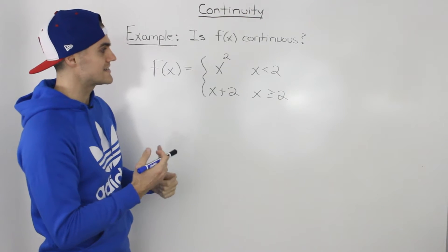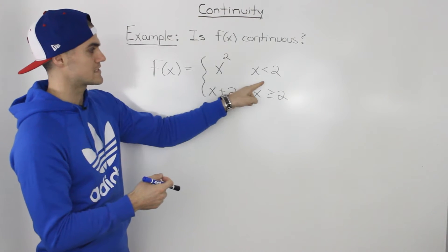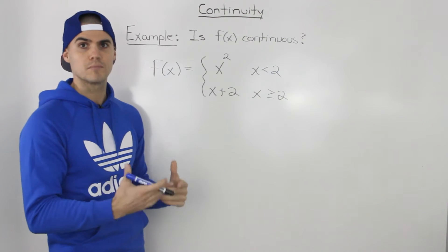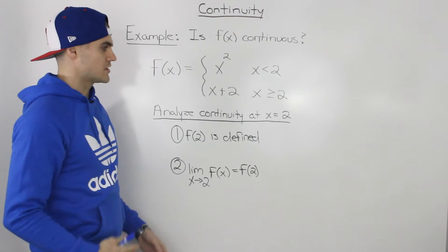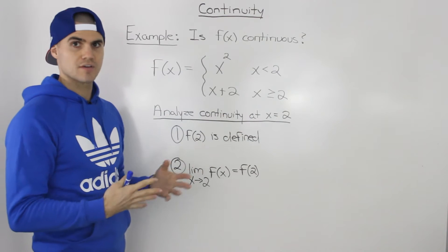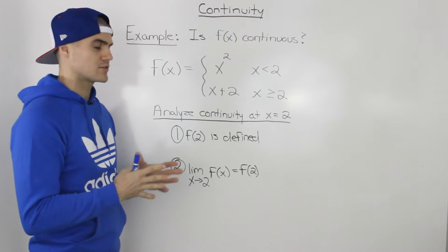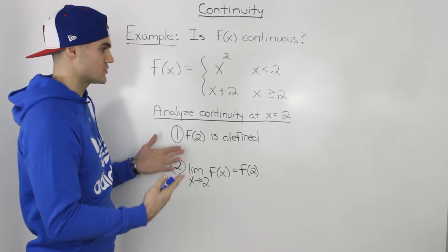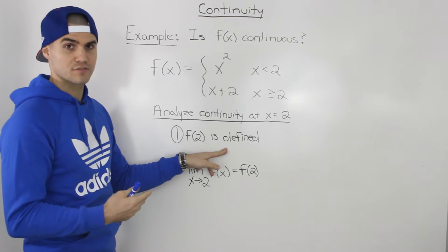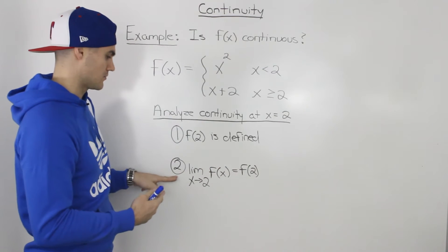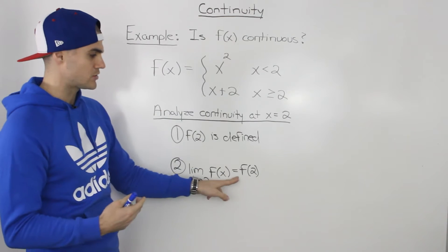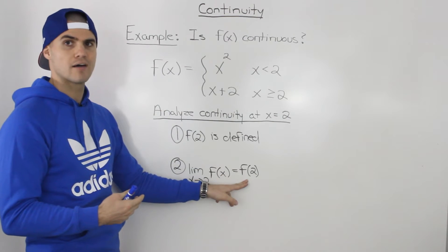The question is: is the function continuous at that x value of 2, where these pieces are meeting? To analyze continuity at x equals 2, we have to prove two conditions. Number one, f of 2 is defined. Number two, the limit as x approaches 2 of the function is equal to f of 2.